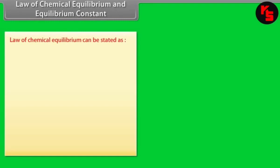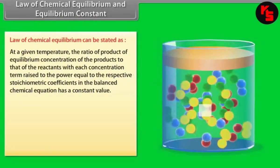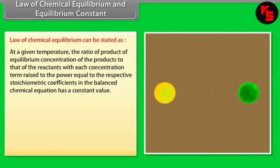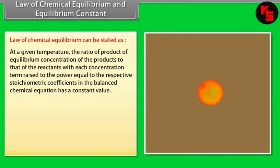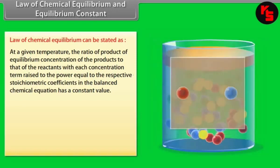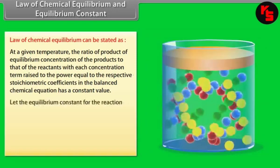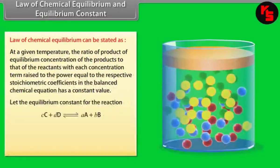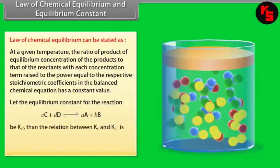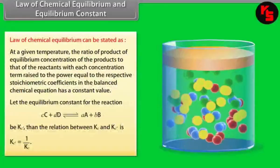The law of chemical equilibrium states that at a given temperature, the ratio of the product of equilibrium concentrations of the products to that of the reactants — with each concentration term raised to the power equal to the respective stoichiometric coefficients in the balanced chemical equation — has a constant value. The equilibrium constant for the backward reaction Kc' is equal to 1/Kc.